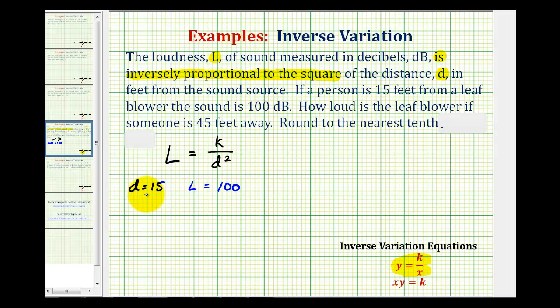So here we'll substitute 100 for L. But again, notice it's d squared, so we'll have 15 squared. And 15 squared is equal to 225. So here we'd have 100 equals k divided by 225.